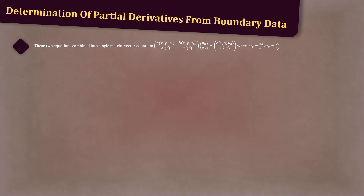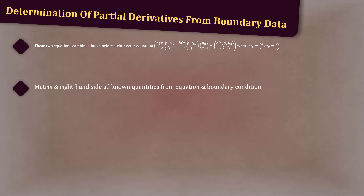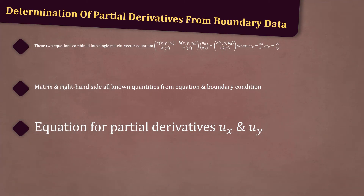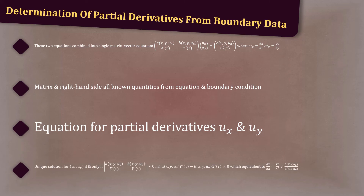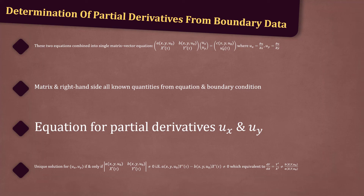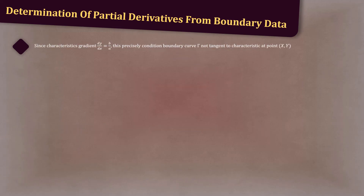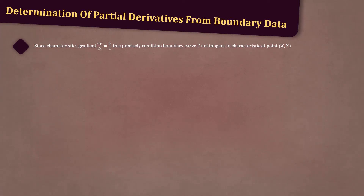These two equations can be combined into a single matrix-vector equation, where Ux equals ∂u/∂x and Uy equals ∂u/∂y. The matrix and right-hand side are all known quantities from the equation and boundary condition. We have a unique solution for Ux and Uy if and only if the determinant is non-zero, i.e. if a(x,y,U₀) times Y'(τ) minus b(x,y,U₀) times X'(τ) is not equal to zero. This is equivalent to saying that dy/dx, which equals Y'/X', does not equal b(x,y,U₀) divided by a(x,y,U₀). Since the characteristics have gradient dy/dx equal to b/a, this is precisely the condition that the boundary curve gamma is not tangent to a characteristic at the point (x,y).